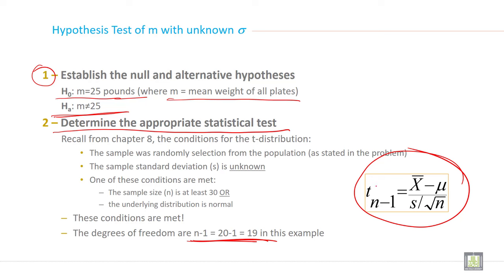So the formula for t-test is here: t with degrees of freedom equals x-bar minus mu divided by s over root n.